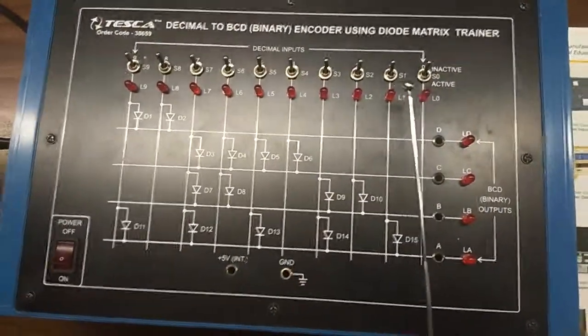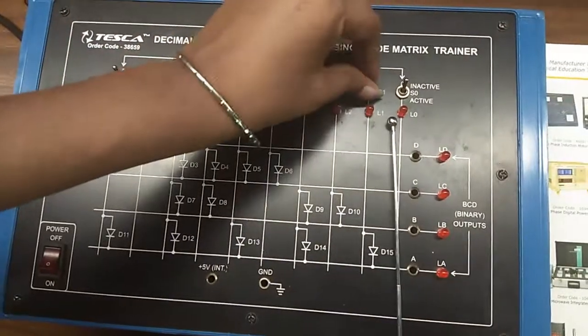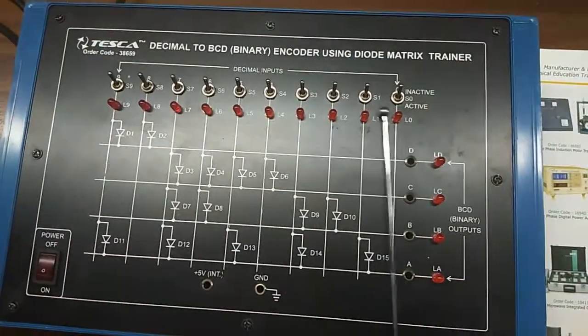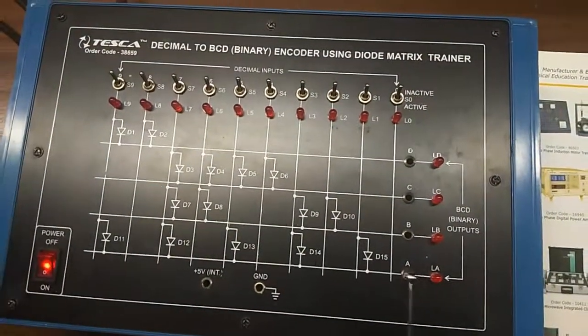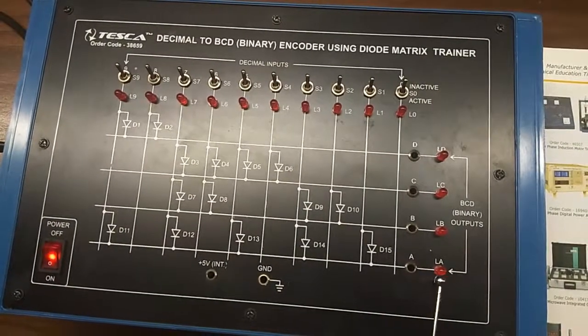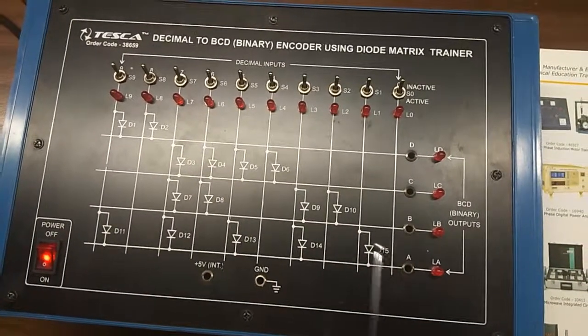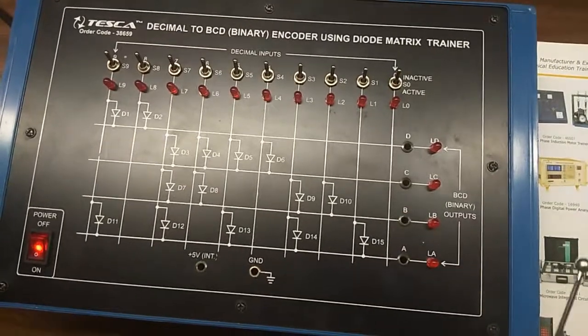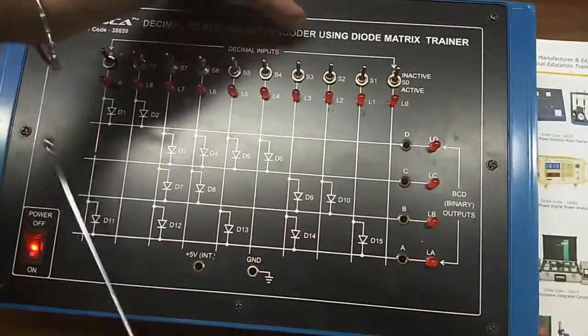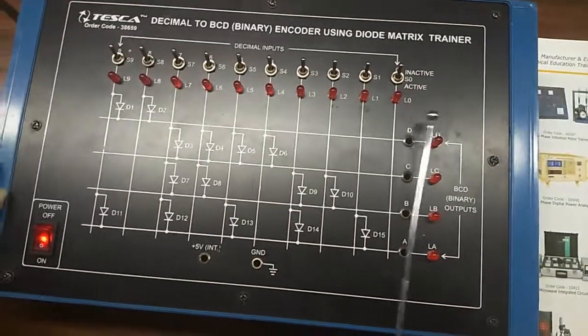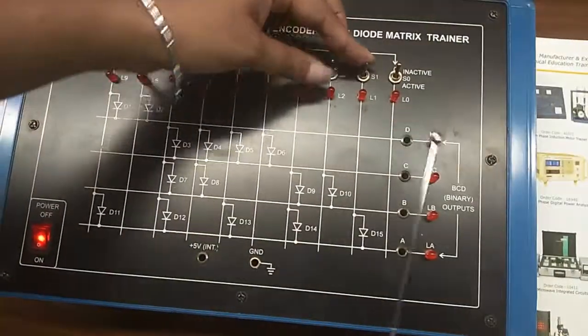When I turn this switch on, this diode becomes active, gives logic 1 status, and the LED starts glowing. There are 10 input lines, and only one line can remain active at a time.